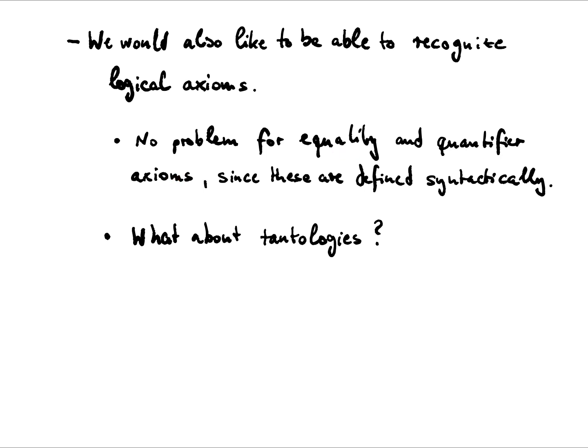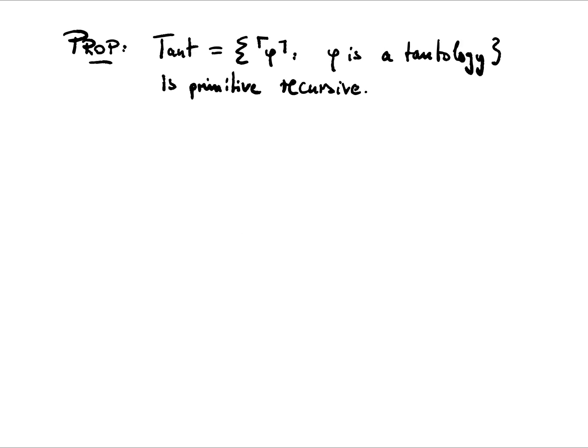The case is a little bit different when it comes to tautologies, because tautologies are not defined directly syntactically, but rather semantically, and therefore we have to work a little bit. So how would one proceed now to show that the set of propositional tautologies in first-order logic is primitive recursive?